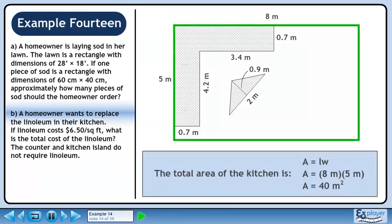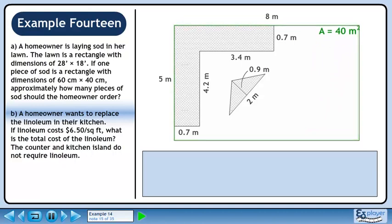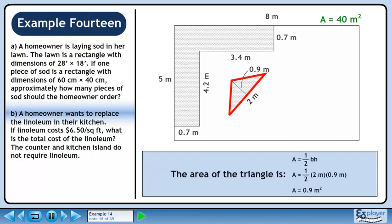The total area of the kitchen is 40 square meters. Now we'll find the area of the triangular kitchen island. The area of the triangle is 0.9 square meters.